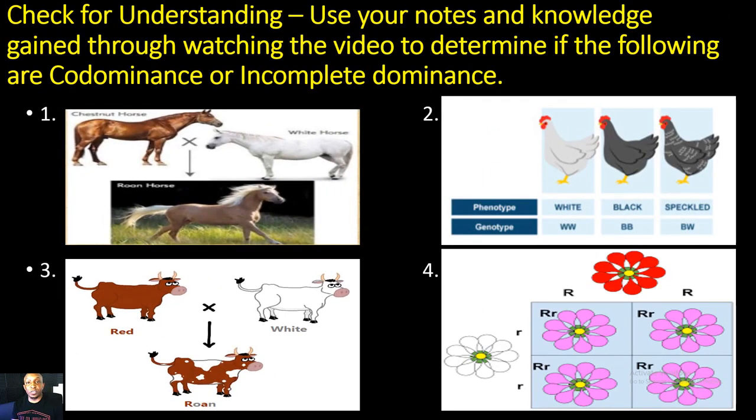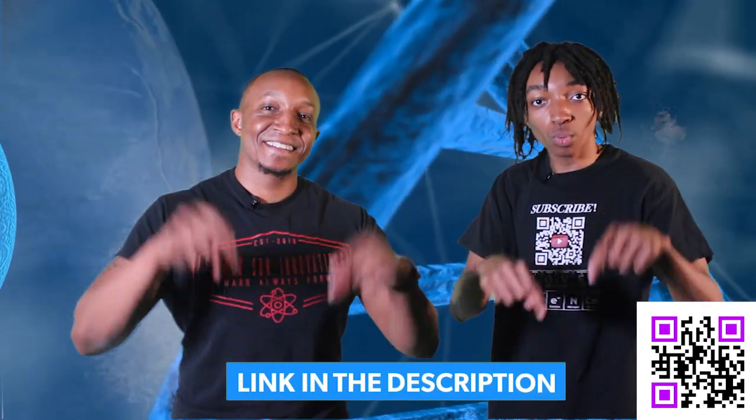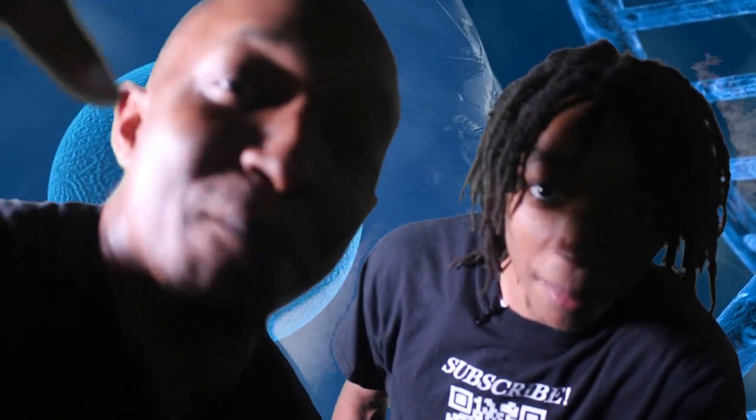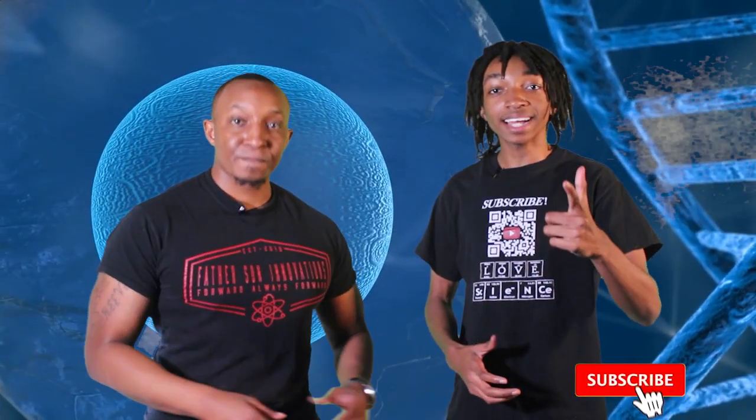Now it's time for a quick check for understanding. Use your notes and knowledge gained through watching the video to determine if the following are codominance or incomplete dominance. You have one minute to complete the check — go ahead and pause the video now. Then let's test your knowledge by taking our video quiz: scan the QR code at the bottom right of the screen or click the link in the description below. Remember, 80% or higher is proficiency — record your results on your proficiency sheet, and if you don't get it the first time, keep going because it's not over until you win. Don't forget to hit that subscribe button and click the bell icon so you don't miss any of our awesome videos.